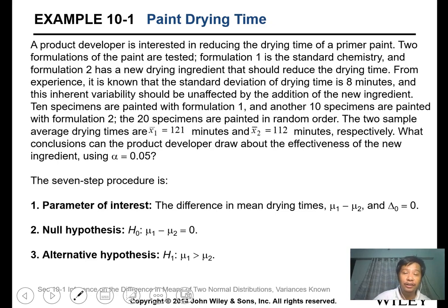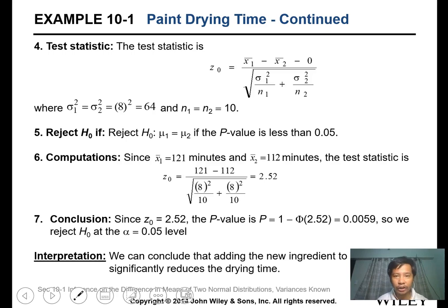What conclusion can the product developer draw about the effectiveness of the new ingredient using a significance level of 0.05? The parameter of interest is the difference in drying time, μ1 minus μ2, and this difference should have no impact on drying time. The null hypothesis is that the difference equals 0, and the alternative is that it should be greater than 0, or μ1 is greater than μ2. The test statistic is the Z-test, and the difference Δ0 is 0. Plug in everything since you're given σ, and both n1 and n2 are the same.